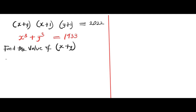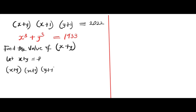In order to solve this problem, let's make x plus y equal to p. So we have x plus y into x plus 1 times y plus 1 equals 2022.